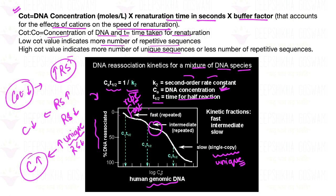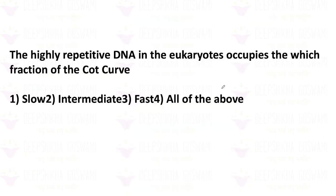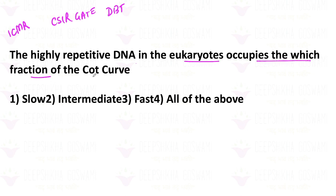I hope you've understood the concept — if not, ask me in the comments section. Now let's talk about this question which appears in ICMR, and is also frequently asked in CSIR, GATE, and DBT exams. The question is: highly repetitive DNA in eukaryotes occupies which fraction of the Cot curve?